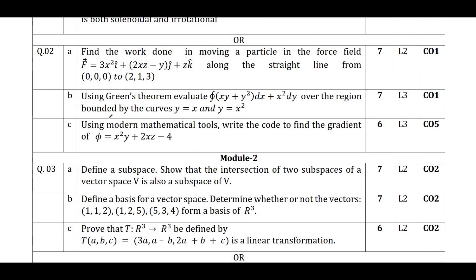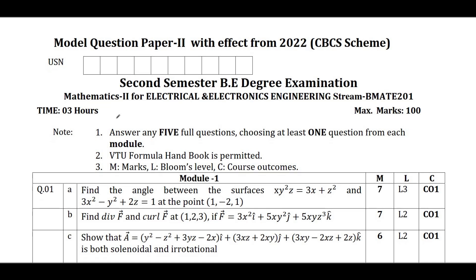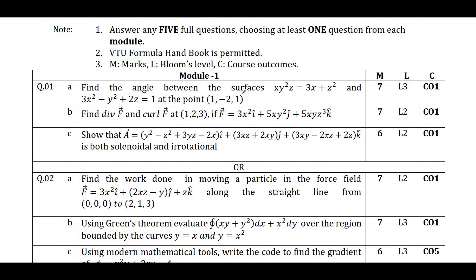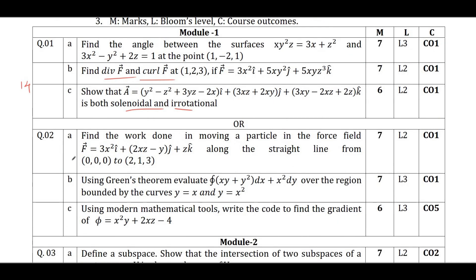Coming to Module 1 for Electrical stream, you will have vector spaces. You can study angle between two curves, and finding curl, divergence, gradient, irrotational, and solenoidal properties. If you study these topics you can score 20 out of 20, but taking minimum marks, you can score 14 marks. Definitely one problem will be on the mathematical tool, and studying just that gives you 7 marks from this module.